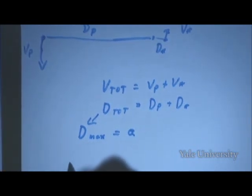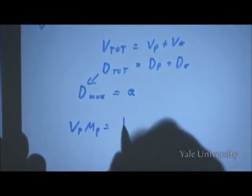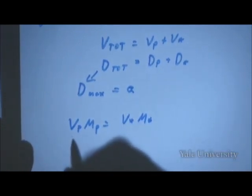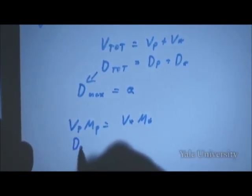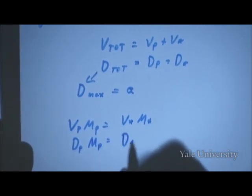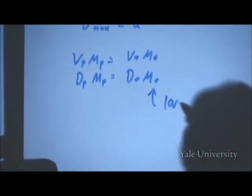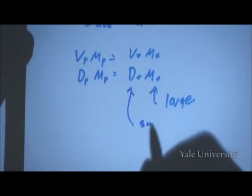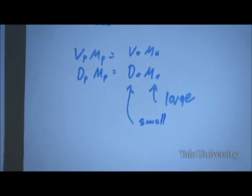As I mentioned, v_p times m_p is equal to v-star times m-star. It is also true that d_p times m_p is equal to d-star times m-star — that's how you figure out where the center of mass is. The whole point of this is that the star's mass is a large quantity compared to the mass of the planet, and therefore these are small quantities compared to the distances and velocities taken by the planet.